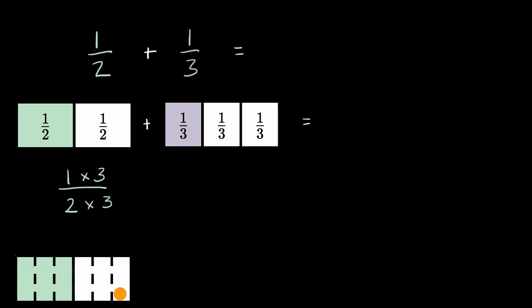And the green part, which you could view as the numerator, I now have three times as many. So these are now sixths. So I now have three sixths instead of one half. So this is the same thing as three over six.